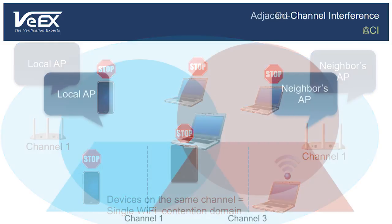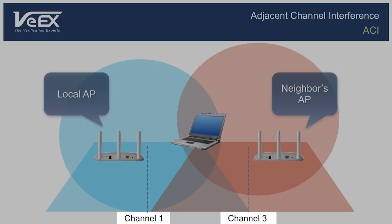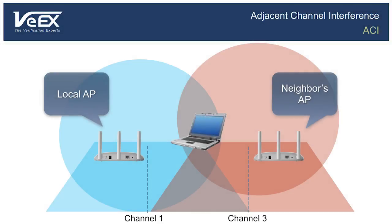Now imagine that your nearest neighbor's access point is configured to a different RF channel. In the 2.4 GHz frequency band, the channels use a 20 MHz wide spectrum, but adjacent channels are only separated by 5 MHz. So if the two access points in our example are configured on channels 1 and 3, their frequency spectrum has significant overlap, which creates interference. The data transmission of both networks will be affected.